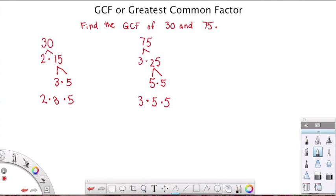Now, when I look at these numbers, what's the greatest common factor? Well, I have a 3 and a 5 here, and I have a 3 and a 5 here. So I would have to say that, and what you might want to do too, is line them up like this.